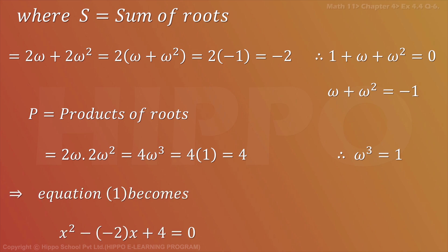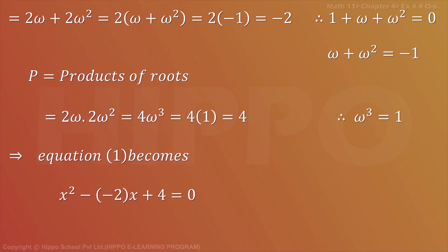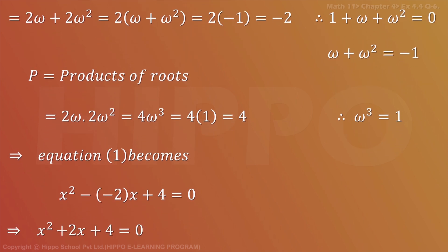So equation 1 becomes x square minus minus 2x, or x square plus 2x plus 4 equals to 0.